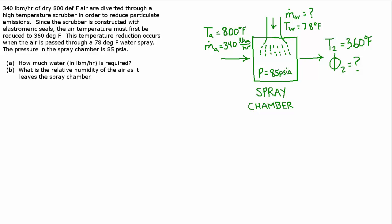340 pounds per hour of dry 800 degree Fahrenheit air are diverted through a high temperature scrubber in order to reduce particulate emissions. Since the scrubber is constructed with elastomeric seals, the air temperature must first be reduced to 360 degrees. This temperature reduction occurs when the air is passed through a 78 degree water spray. The pressure in the spray chamber is 85 psi.